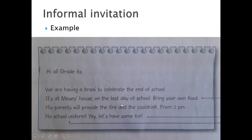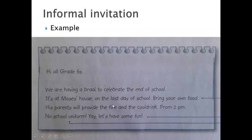You can see that this example is informal — it's like a message from a friend, it's really casual. The person just says 'Hi, all grade 6.' This invitation is going out to everyone in grade 6. They also state the date — the last day of school — the place — Moses' house — and the time — from 2 p.m. They are told that Moses' parents will provide the fire for the braai as well as the cool drinks. And you can even see informal language here: 'Yay! Let's have some fun.' So this one is going out to just friends. You can now see the difference between a formal invitation and an informal invitation.